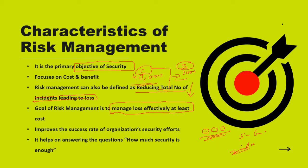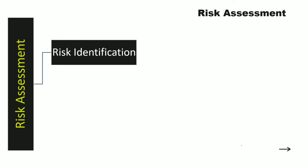Now we will talk about how to identify and assess risk. This is risk assessment. The first and most important part of risk assessment is risk identification. If you are going to solve a problem but you don't even know whether the problem exists or what it is, you cannot solve it. So the most important first step is: what is the risk, and how do you identify it — risk identification.